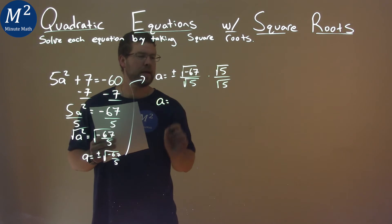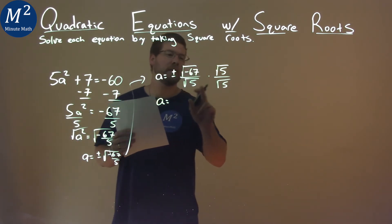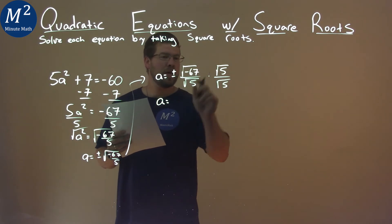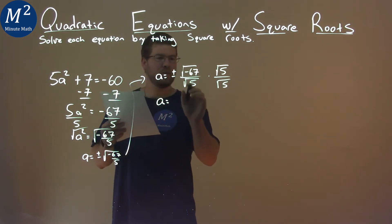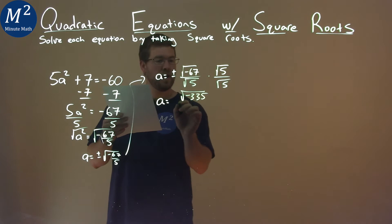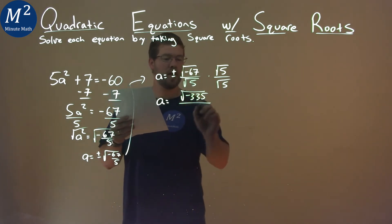But what it does do, it allows me to eliminate the square root in the denominator. So, the numerator, we can multiply that out. And so negative 67 times 5 is the square root of negative 335 over the square root of 5 times the square root of 5, which is just 5.